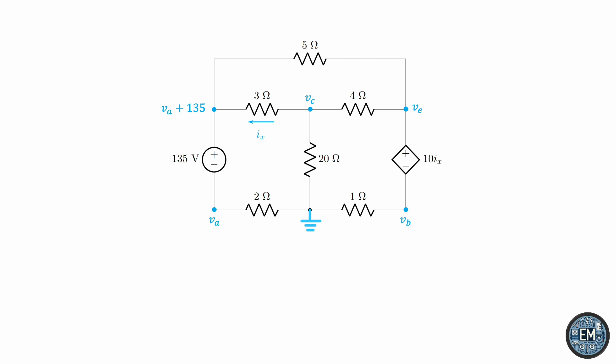And we can do the same thing for VE in terms of VB. We can say VE is 10IX more than VB, and replace it over there. So, we now have 3 unknown voltages instead of 5. That's good progress.